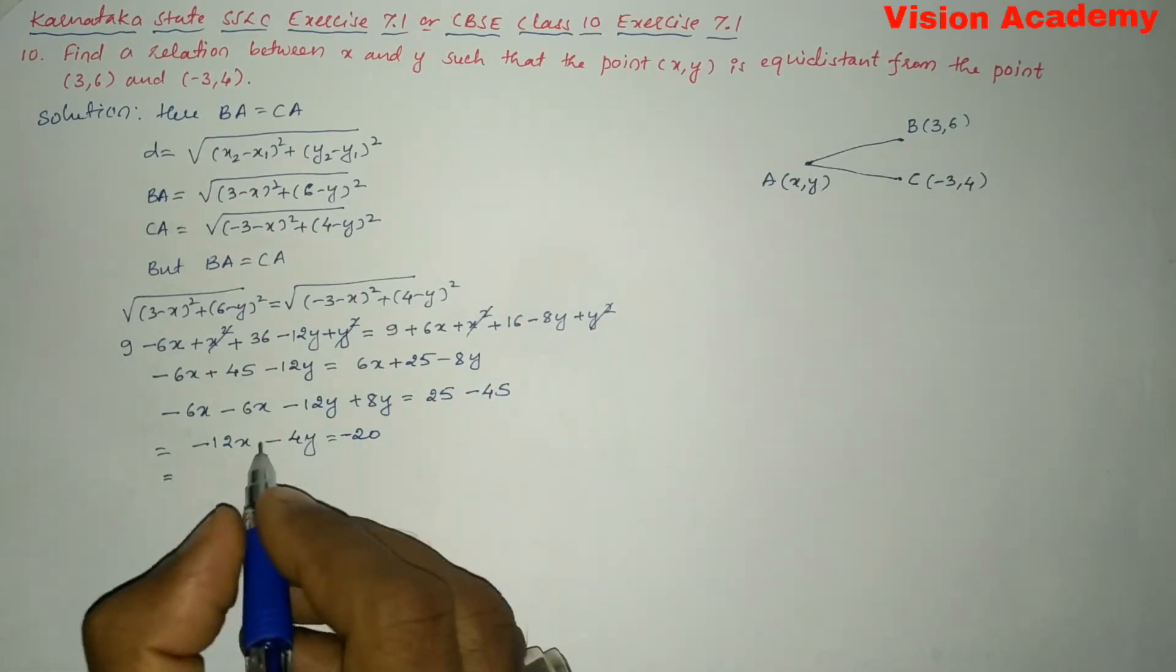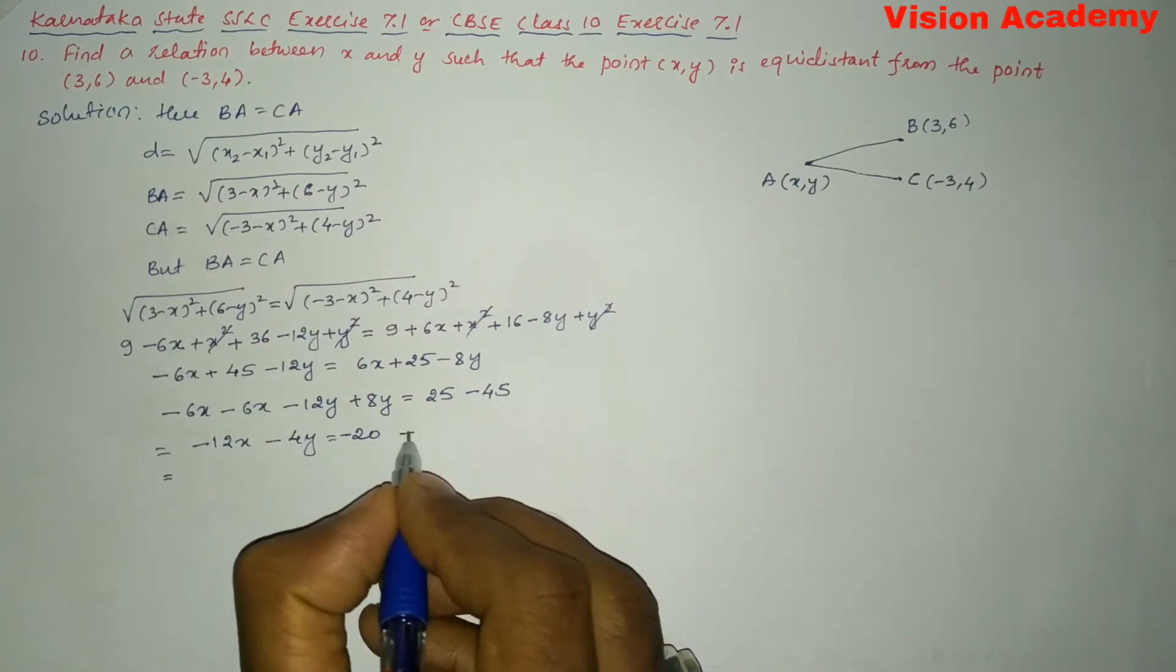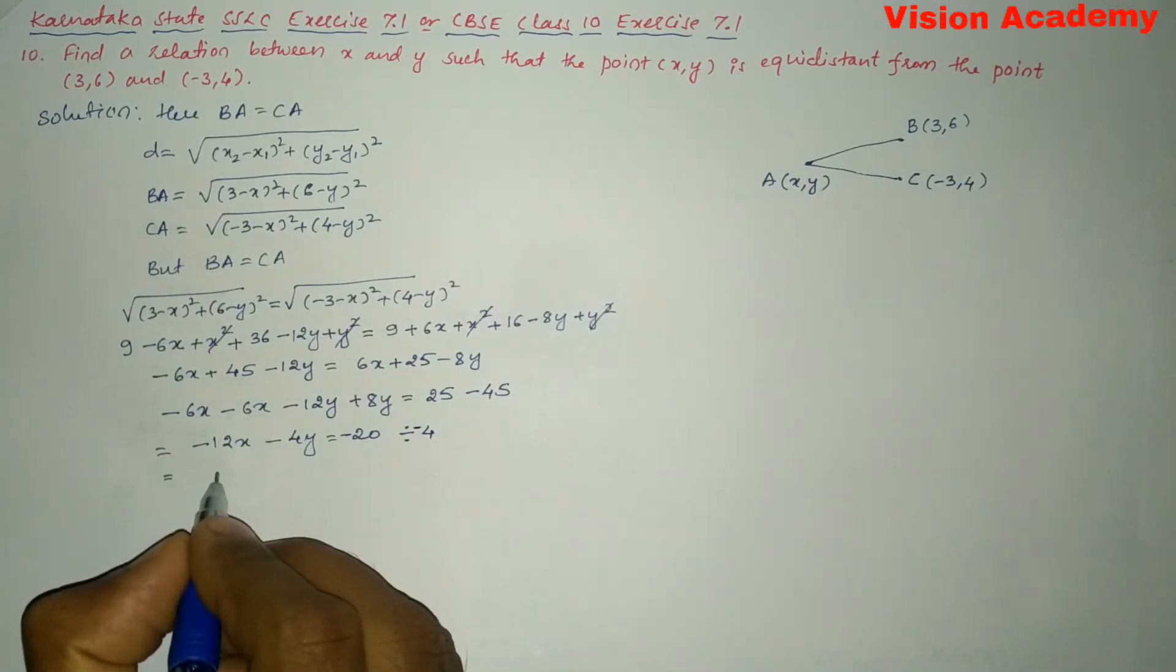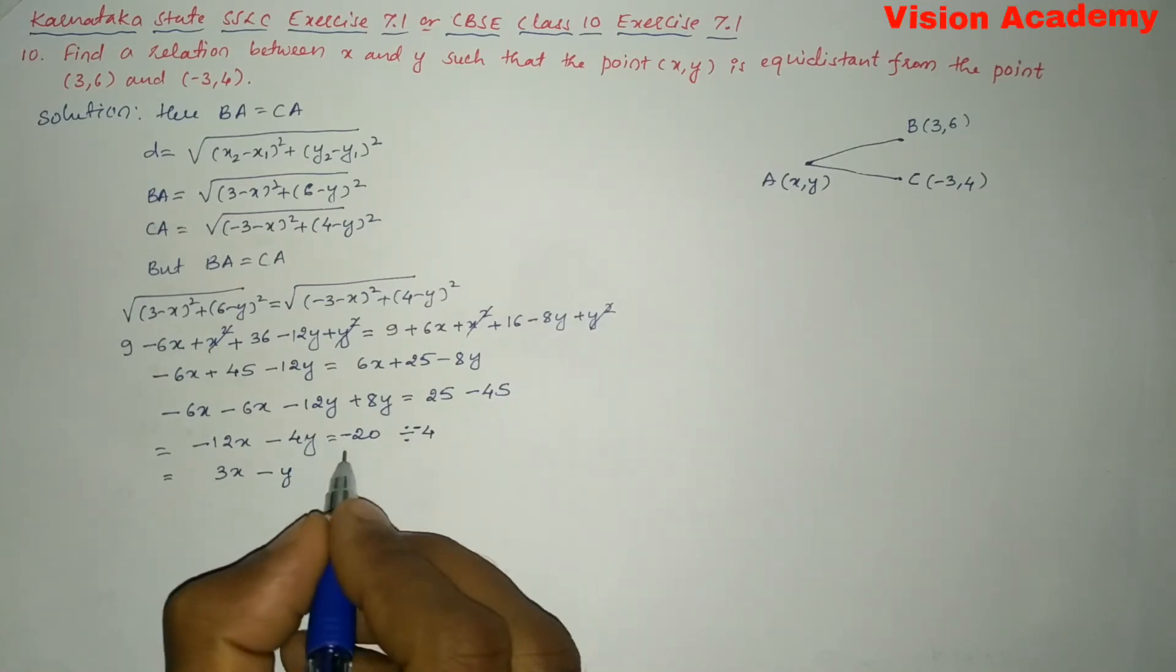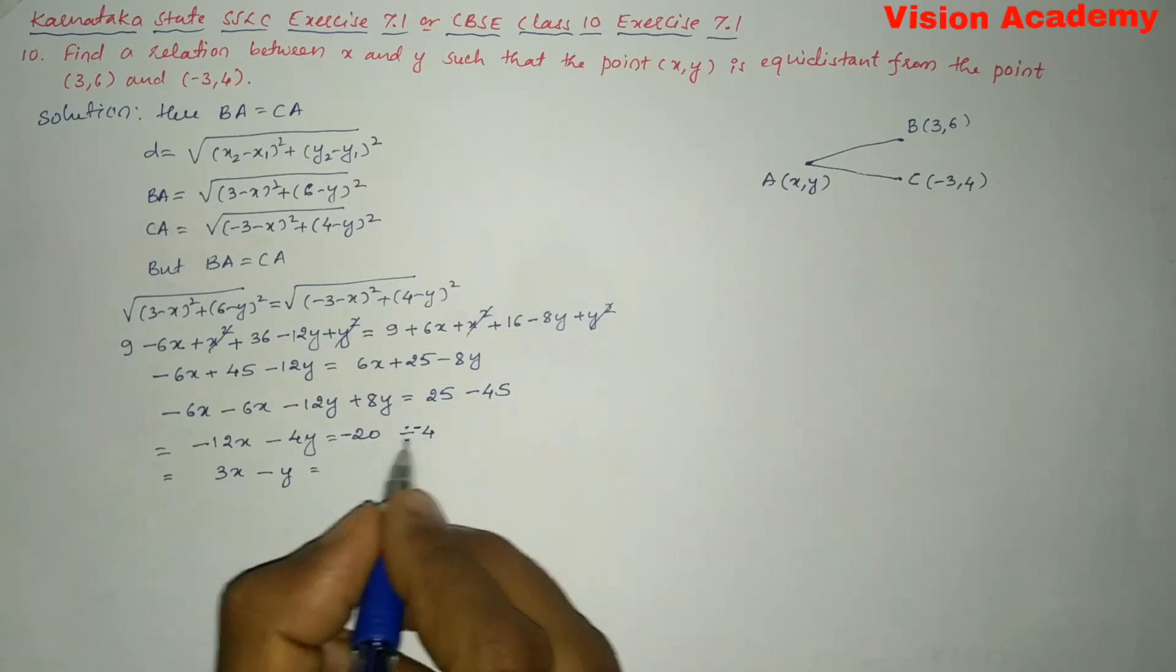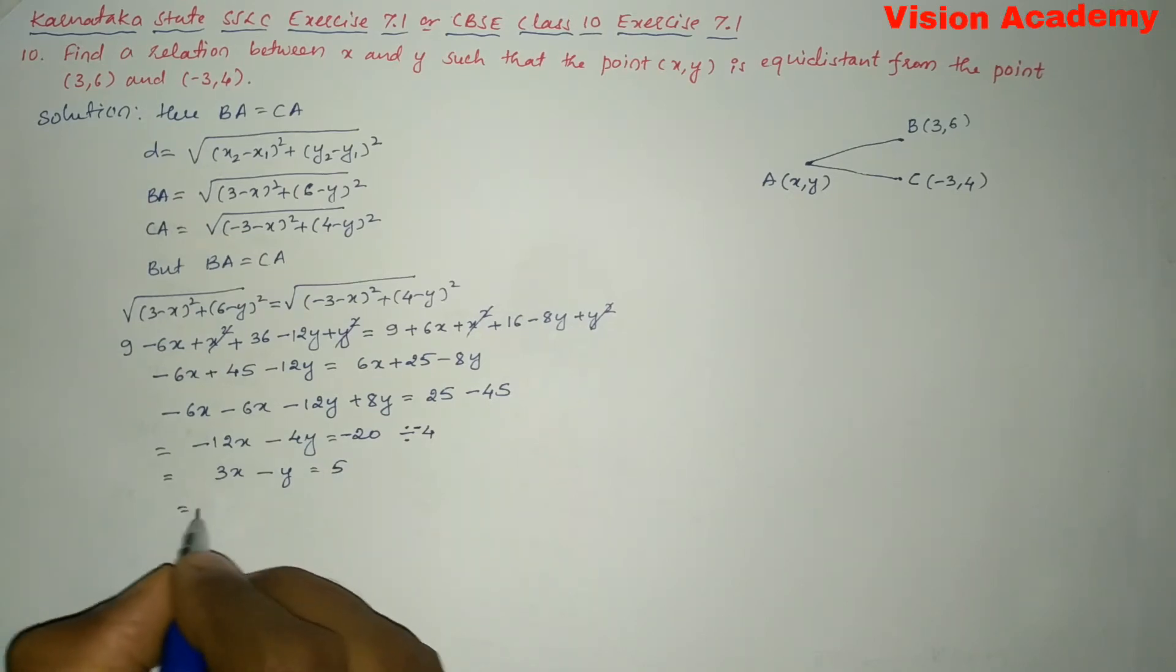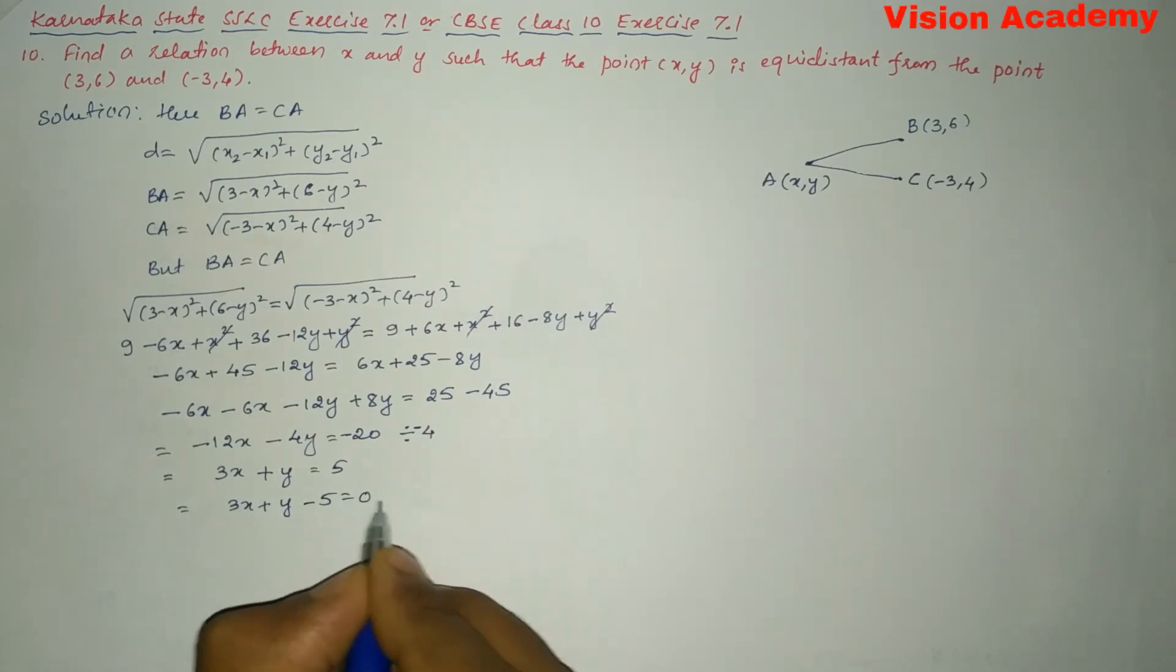So, now let us divide this expression by -4. This gives us 3X, next Y, and then you can write this one as +5. So, you can write this one as 3X + Y - 5 = 0.